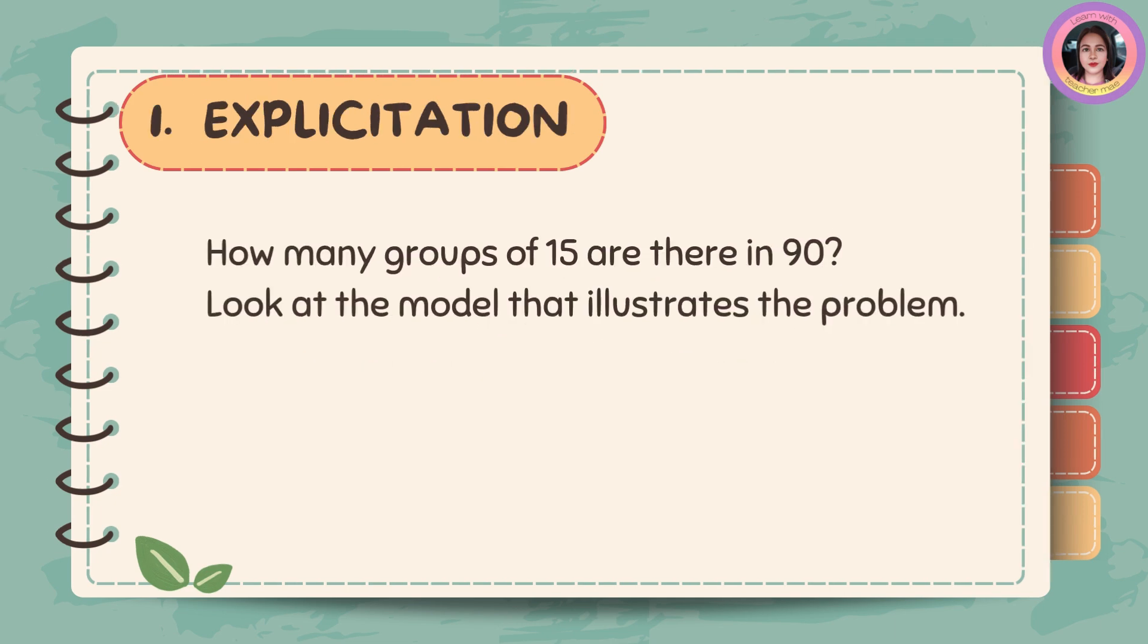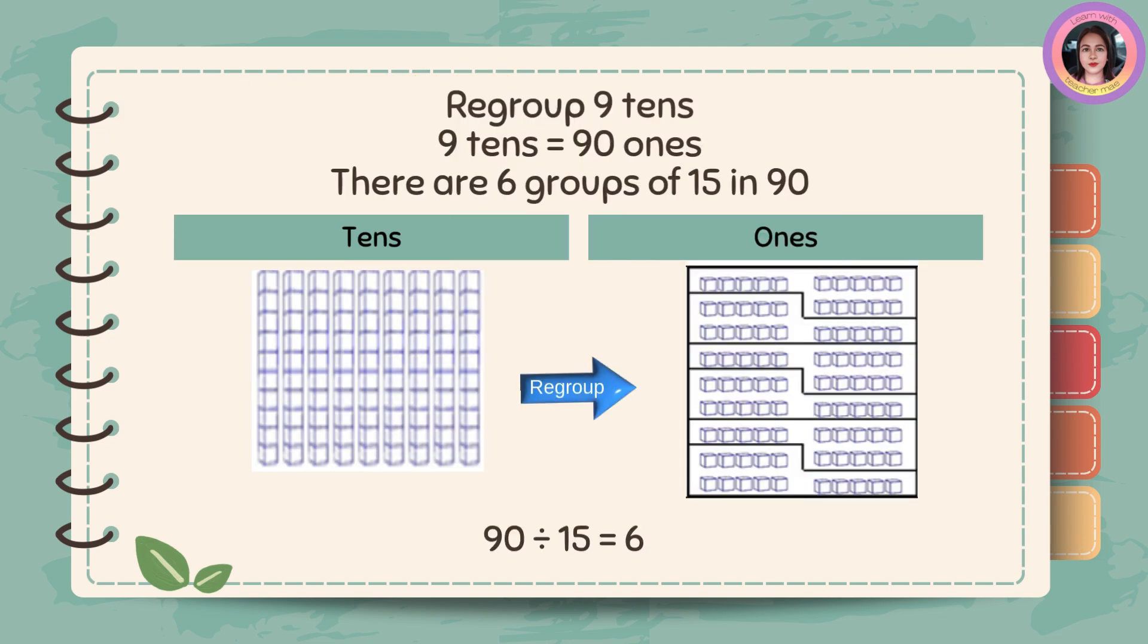How many groups of 15 are there in 90? Look at the model that illustrates the problem. Regroup 9 tenths. 9 tenths is equal to 90 ones. There are 6 groups of 15 in 90. Therefore, 90 divided by 15 is equal to 6.